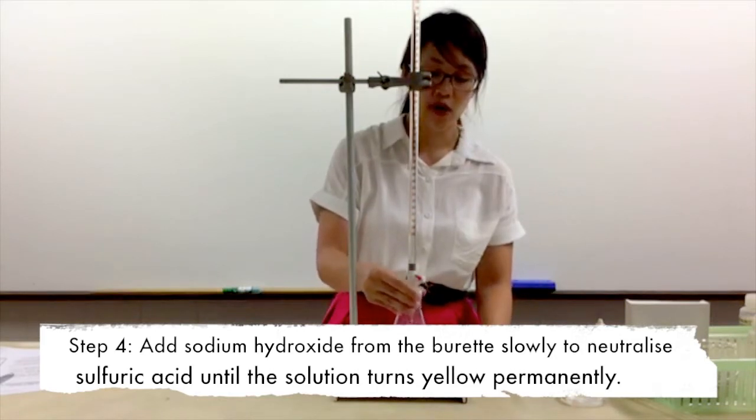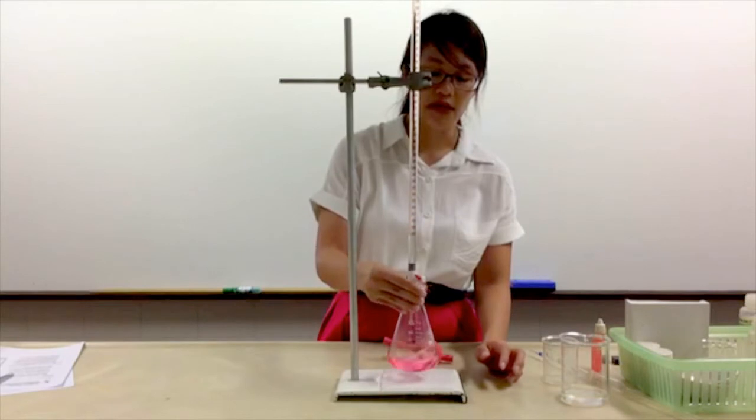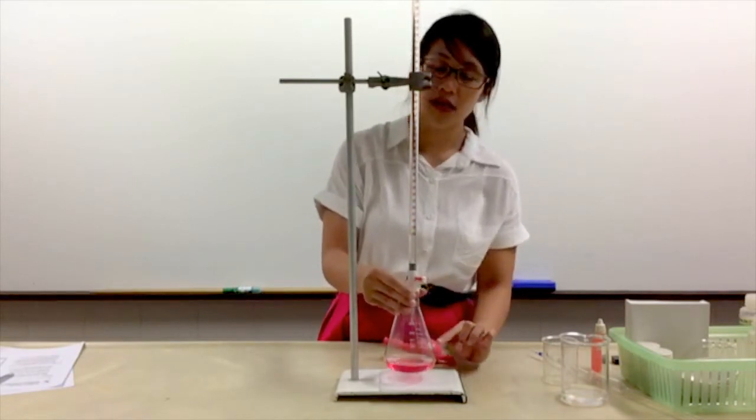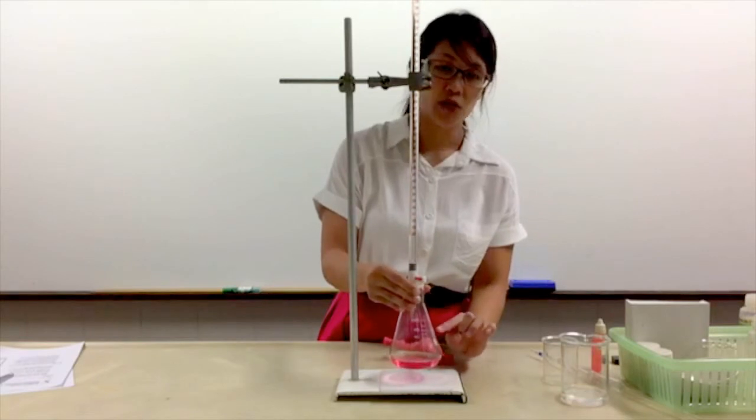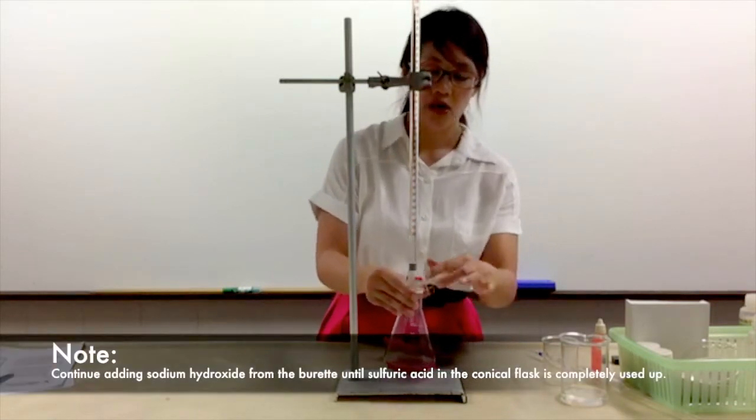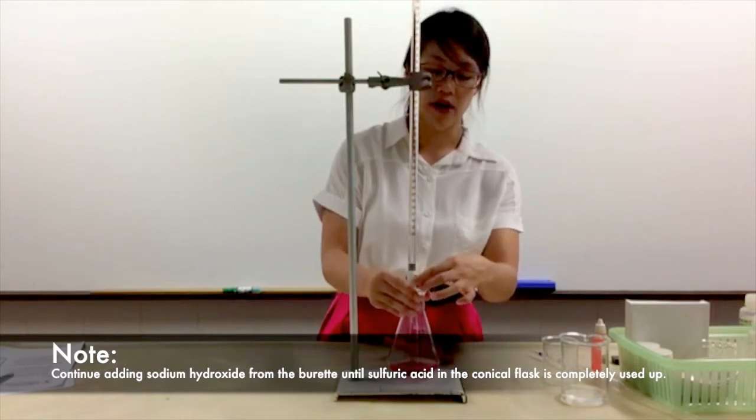As I swirl, I will allow thorough mixing of the acid and alkaline. Can you see that it is still red? Which means that there is still acid in your conical flask, so you need to add more alkaline from the burette.